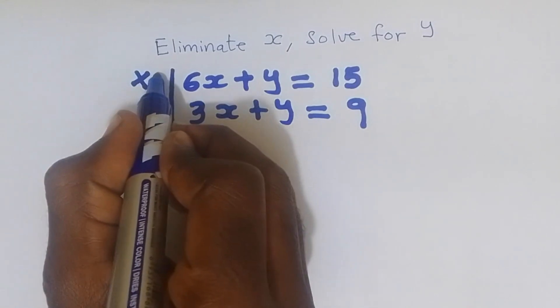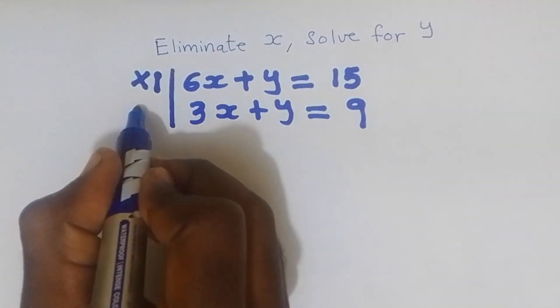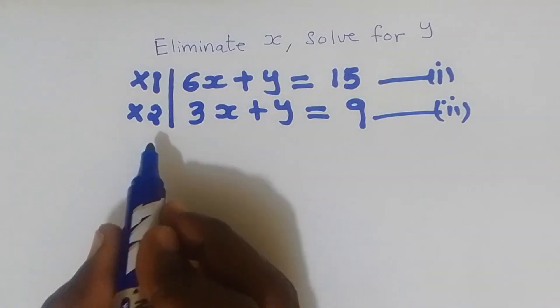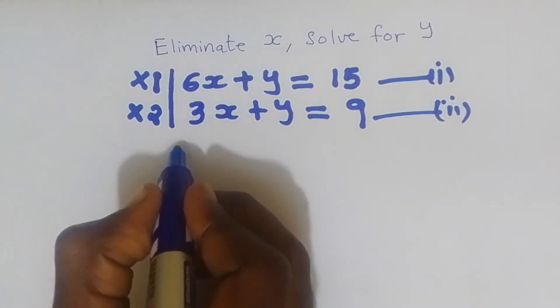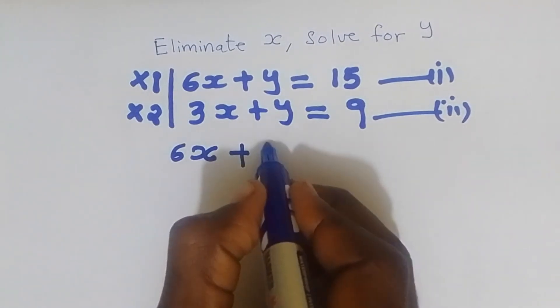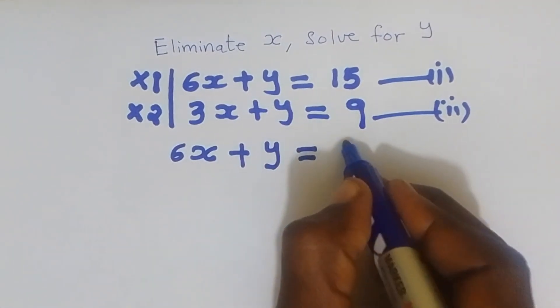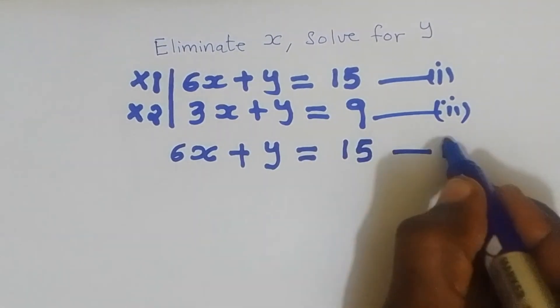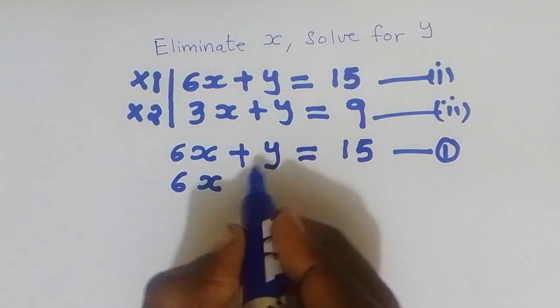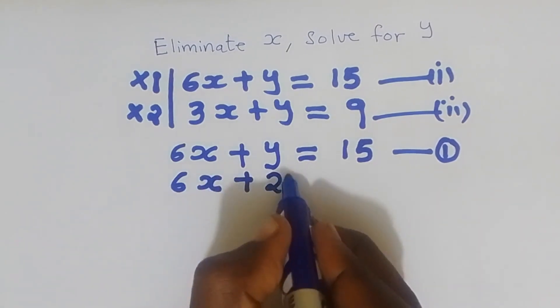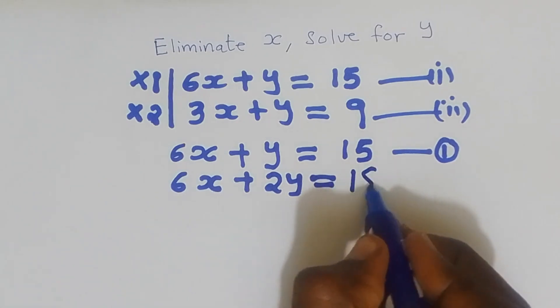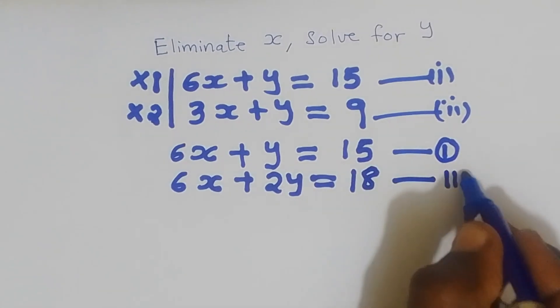is multiply equation number 1 by 1 and equation number 2 I'll multiply by 2. Let us multiply: 1 multiply by 6x I'm going to get 6x, 1 multiply by y I'm going to get y, 1 multiply by 15 I'll get equal to 15, this is equation number 1. 2 multiply by 3x I'm going to get 6x, 2 multiply by y I'm going to get 2y. This is equal to 2 multiply by 9 I'm going to get 18. This is equation number 2.